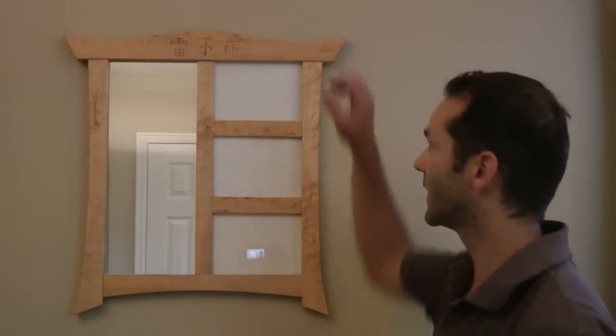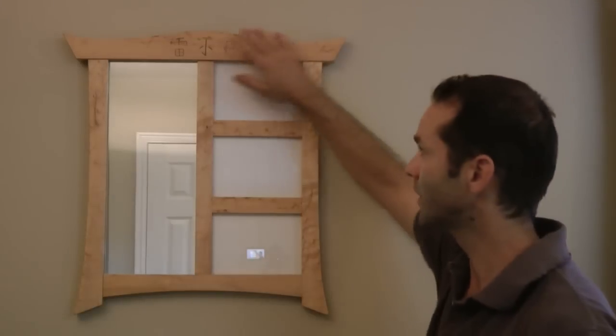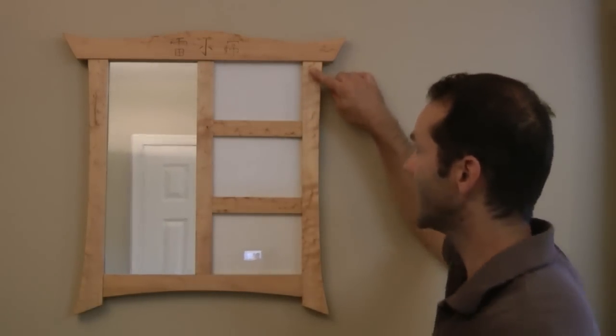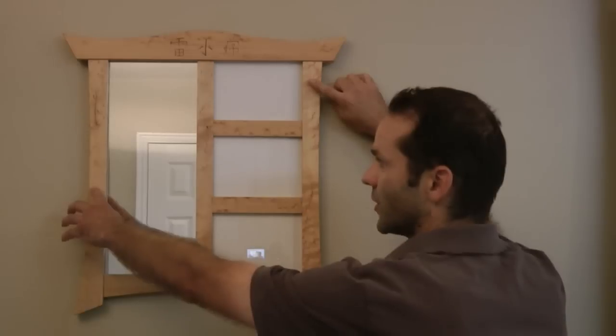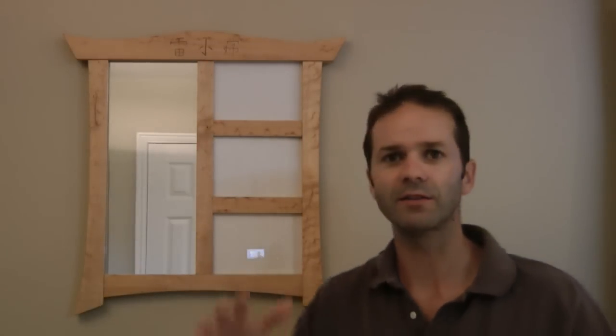One of the things is that the top piece here is actually the thickest of all the material of the frame. It then steps down to the side pieces which are the second thickest thickness, and then these pieces here also step down from the sides, so it has a three-tier step there.